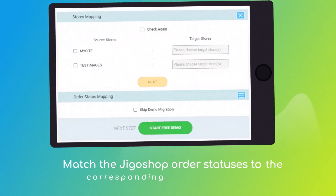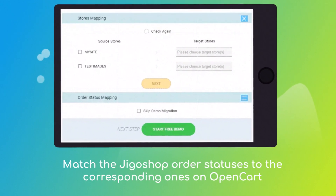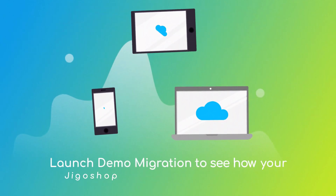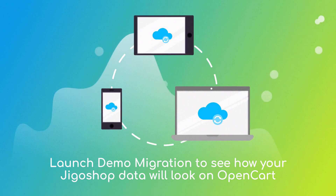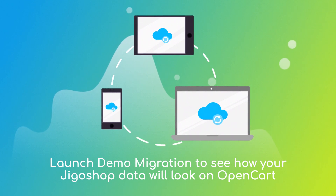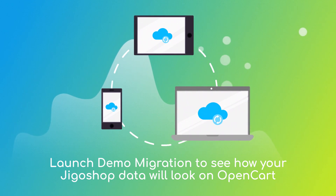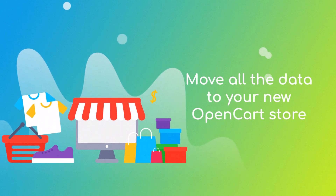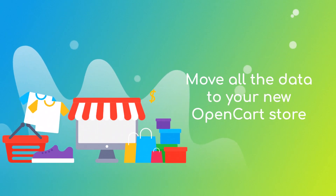Then click the hamburger button to match your JigoShop multiple stores, customer groups, and order statuses to the OpenCart ones. After checking the demo results, you're all set to launch the full migration and move all of your JigoShop data to the new OpenCart store.